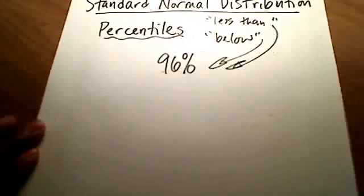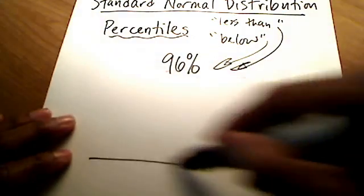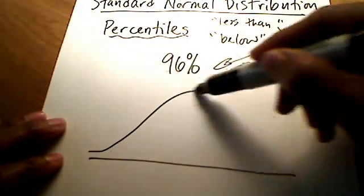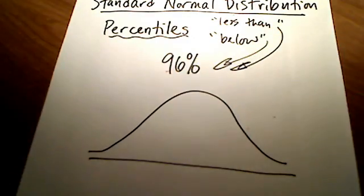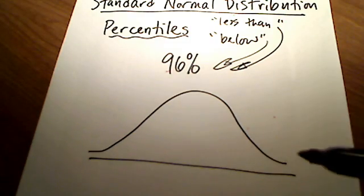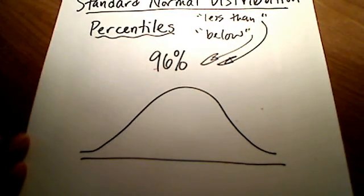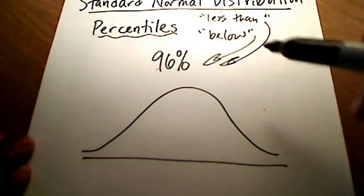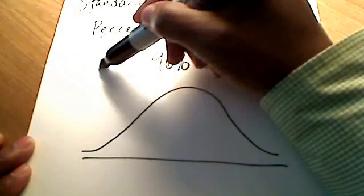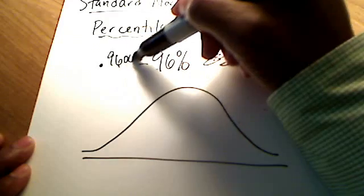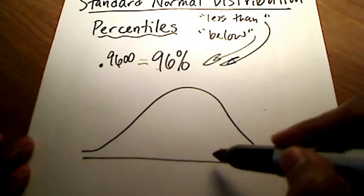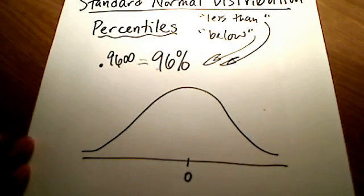So the 96th percentile is kind of this picture going on here. Think of it this way: you are referring to a Z number, a Z score, where 96% is below yours. You also know that 96% is .96, right? So let's say that zero is sitting in the middle.